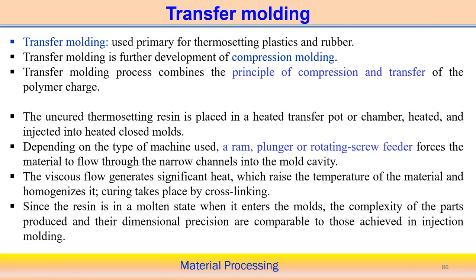The next processing technique for thermoset plastics is transfer molding, sometimes called resin transfer molding. From the name itself, it is clear that transfer molding is mainly used for thermosetting plastics and rubber. It is considered a further advancement of the compression molding process, combining both compression and transfer of liquid resin into the mold cavity.